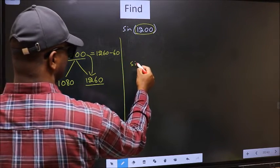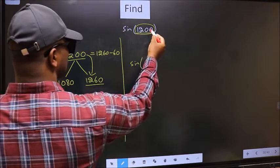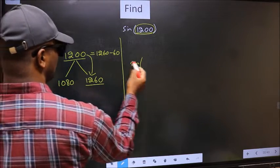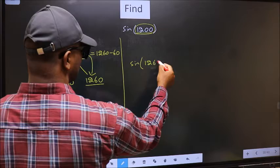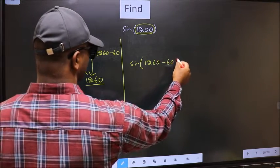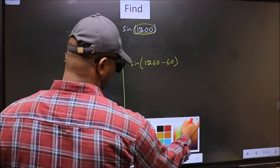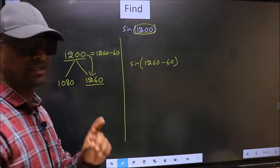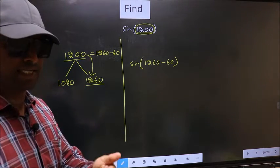So this will become sin. In place of this, we should write 1260°-60°. This is your step one.